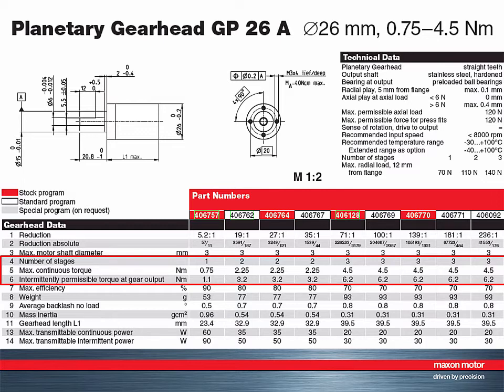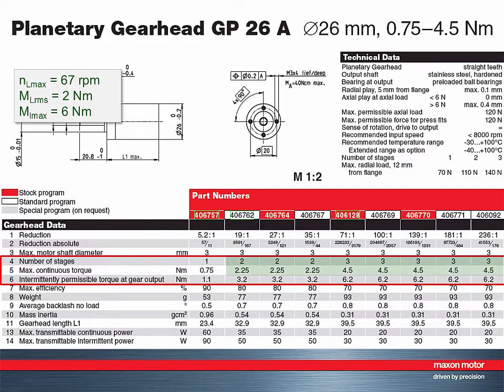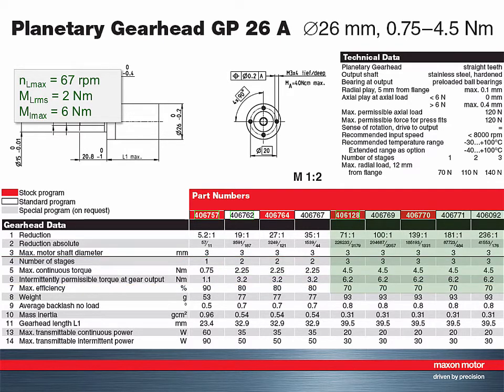Our application requires two newton meter continuous torque, which could be covered by two stages or more. However, the short-term peak load can only be covered by a gearhead with at least three stages. It has an efficiency of 70%. Essentially, the torque requirements of our application have resulted in the selection of a gearhead type and number of stages.